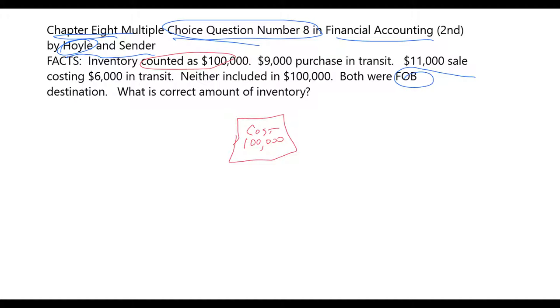However, there is one amount of inventory that has come in. At the time they do the count, this inventory is somewhere in transit. It has not got to the company yet. And this inventory has a cost of $9,000.